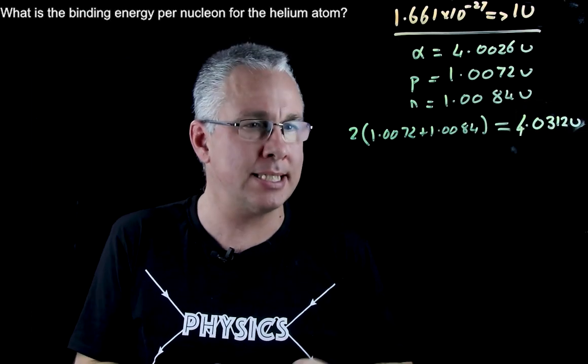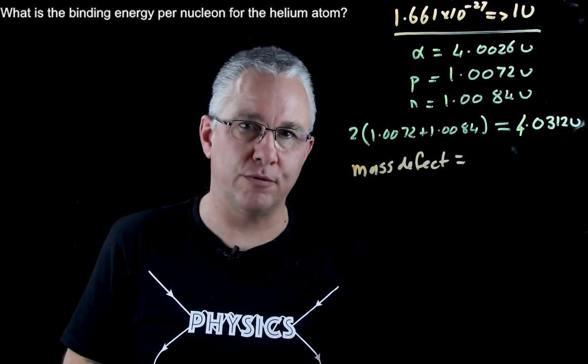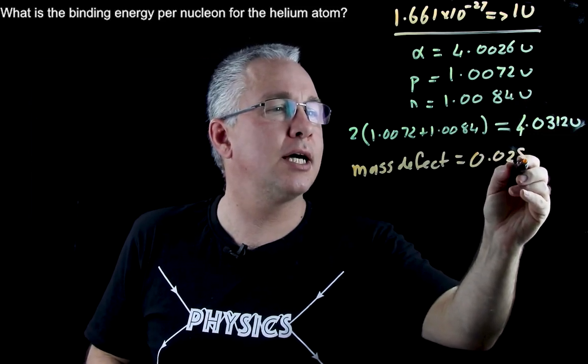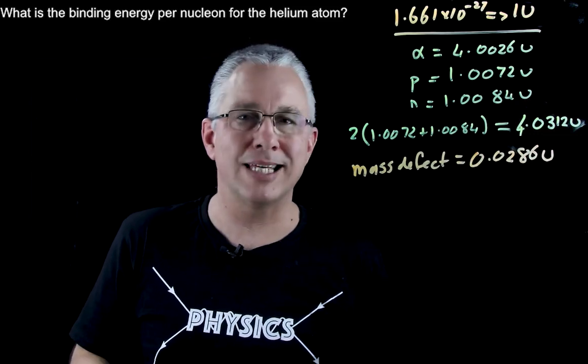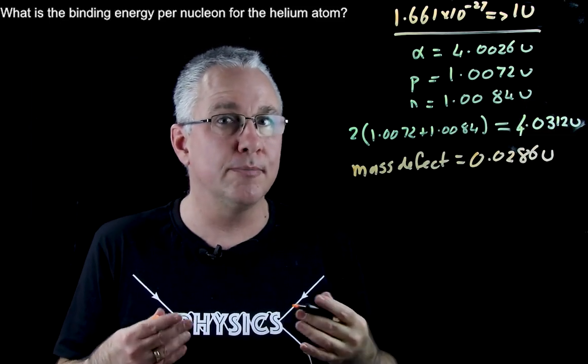So therefore our mass defect is simply the difference between those two values and you're going to get a value of 0.0286u. So that's the mass that is lost in converting it into the binding energy.